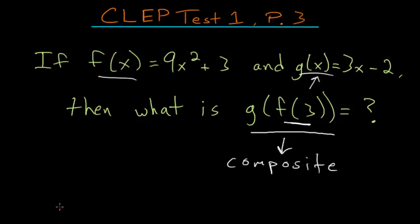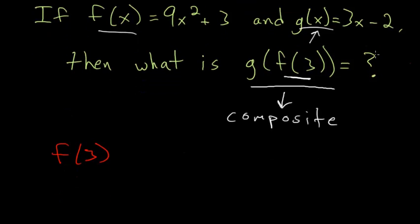So to find f of 3, we'll just plug that in anywhere we see an x in here. So we have 9 times 3 squared plus 3. 3 squared is 9, 9 times 9 is 81, and 3 to that gives us 84.